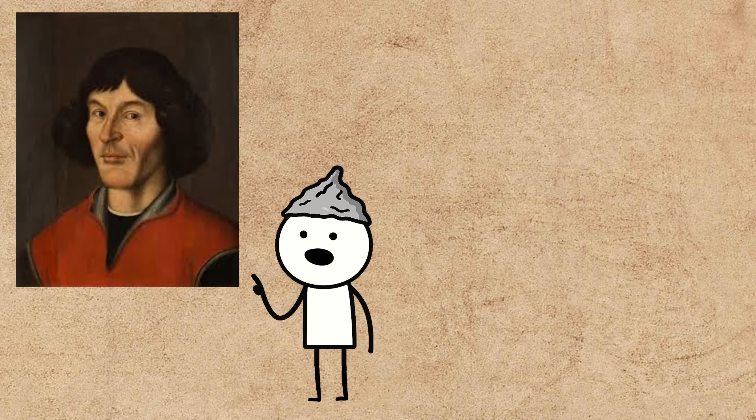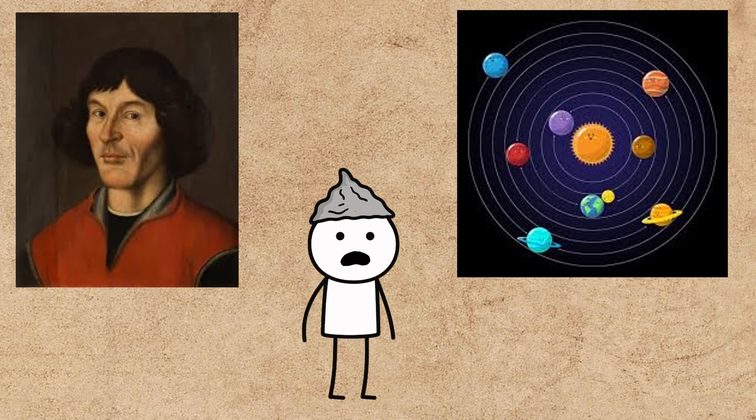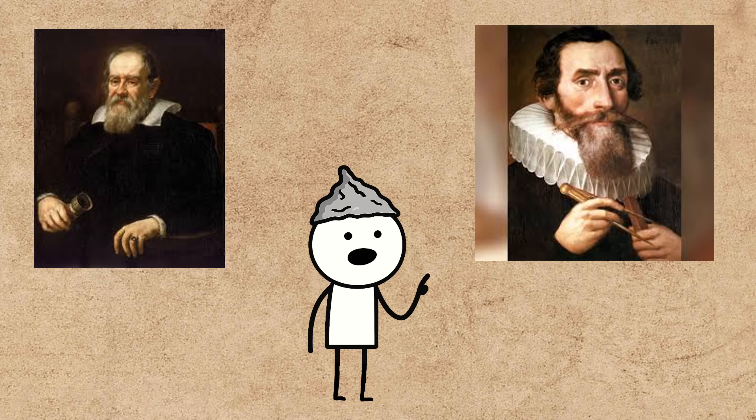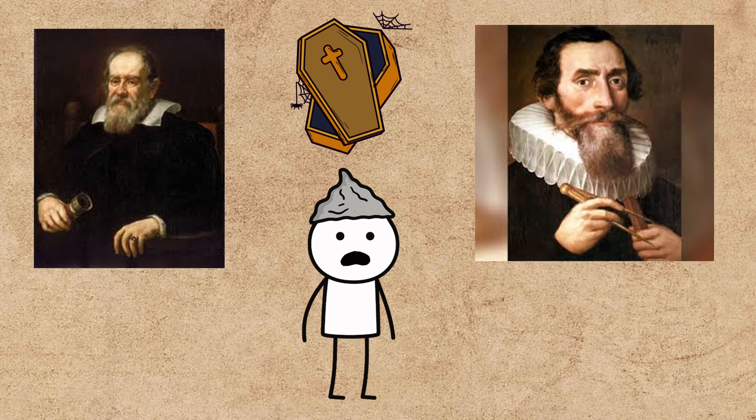In the 16th century, Nicholas Copernicus proposed a much simpler sun-centered model. His idea was initially met with skepticism, but over the next century, the observations of astronomers like Galileo Galilei and Johannes Kepler's laws of planetary motion hammered the final nails into the coffin of the geocentric model. We weren't the center of the universe, after all. We were just another planet orbiting the sun.